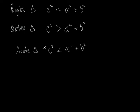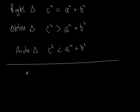In another chapter, they're going to give you three sides of a triangle — say three, four, and ten — and ask: is it a right triangle, obtuse, acute, or not even a triangle at all? First you have to determine whether it can even be a triangle.